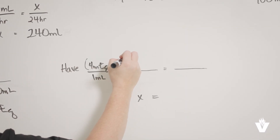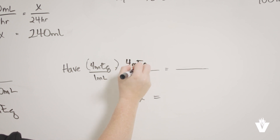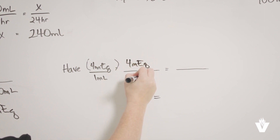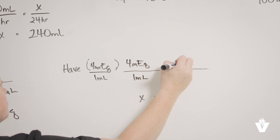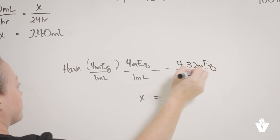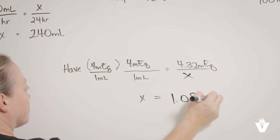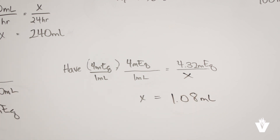We must now calculate how many milliliters of the in-stock sodium chloride is needed to get the required concentration. On the left, we have 4 milliequivalents over 1 milliliter. On the right, we have 4.32 milliequivalents over unknown milliliters. Once we cross-multiply and solve for the unknown, we have 1.08 milliliters of the 4 milliequivalent per 1 mL sodium chloride that will be used in this order.